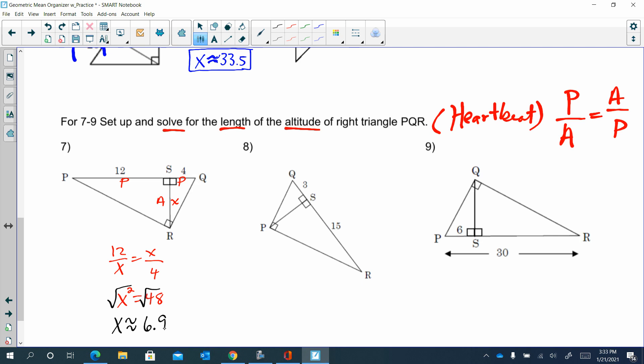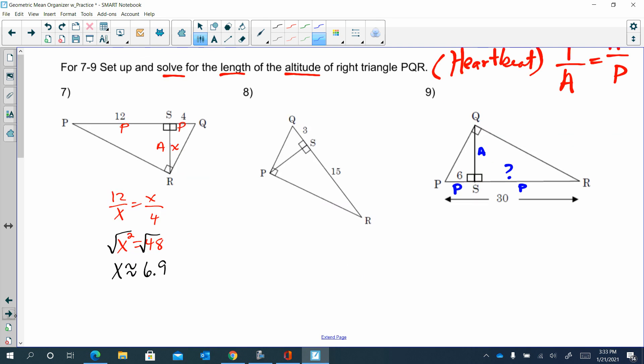So you are doing heartbeat on all of these, or P over A equals A over P. All right. And you will need to find this missing piece. You will need to find this missing piece. So you can do your P over A, A over P.